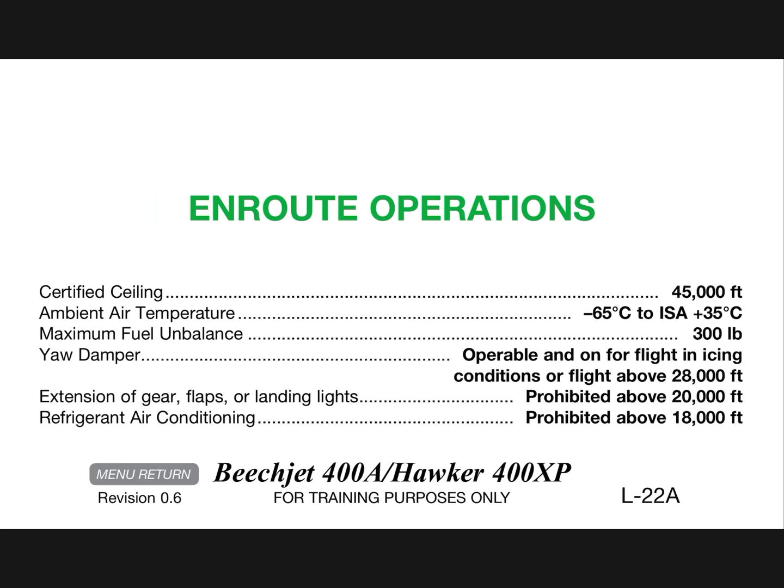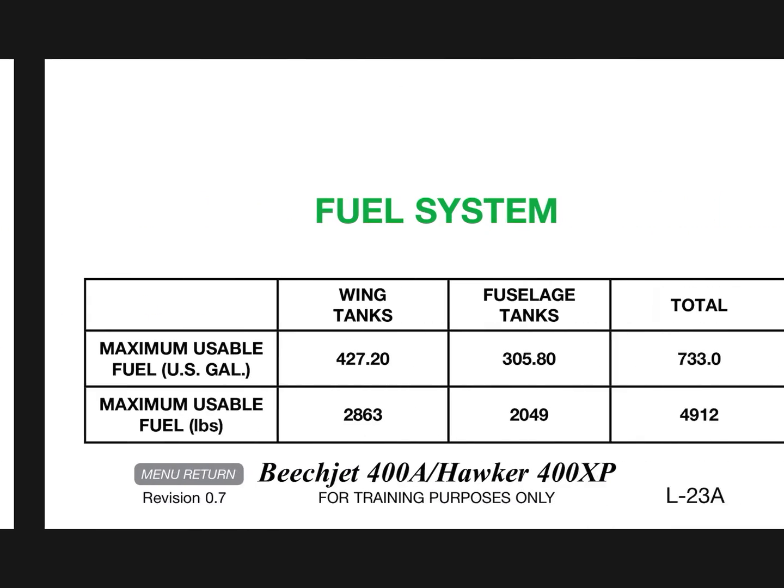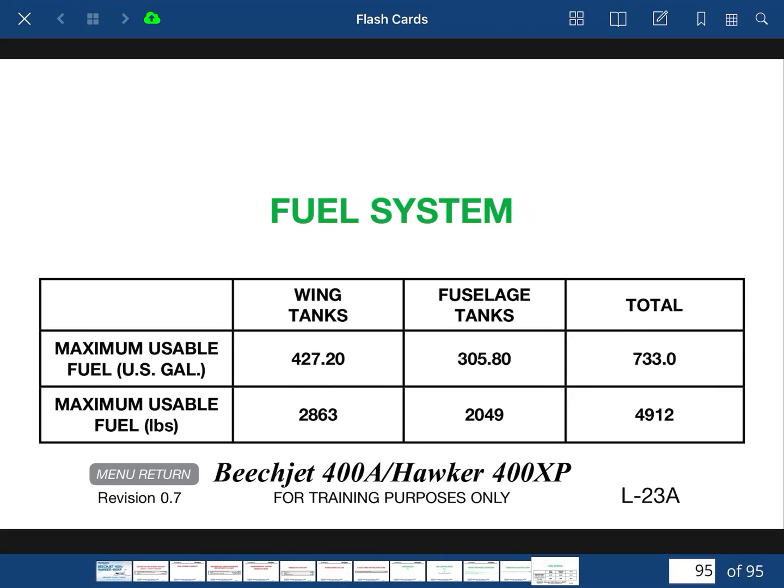Extension of gear, flaps, and landing lights is prohibited above 20,000 feet. Refrigeration air conditioning prohibited above 18,000 feet. Fuel system: maximum usable fuel in the wings is 427.2 gallons, fuselage slots is 305.8 gallons, for a total of 733 gallons. In pounds: 2,863 in the wings, 2,049 in the fuselage, for a grand total of 4,912 pounds.